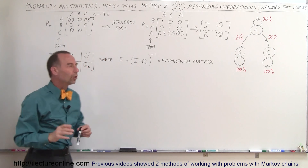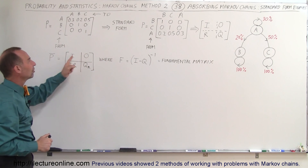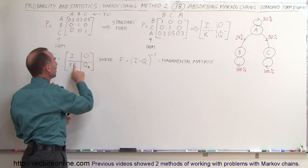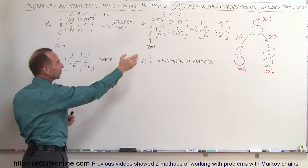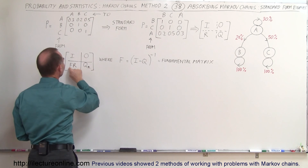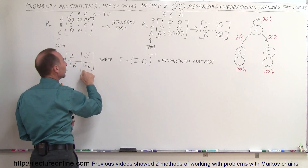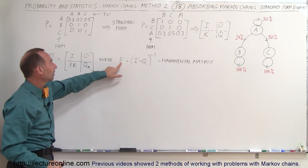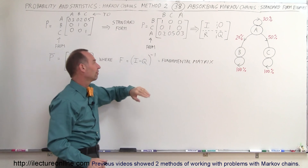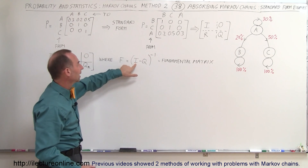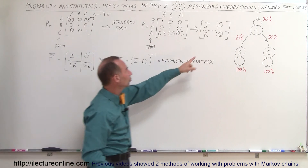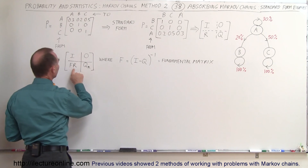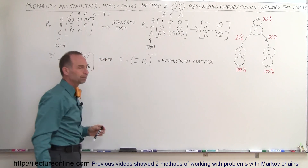To find the stable transition matrix, we convert it so that the I and zero stay the same, but instead of the R matrix we get F times R, and Q sub n which is typically equal to zero. F times R requires us to first find the fundamental matrix F, which is the identity matrix minus Q, and then take the inverse of that. Then we multiply F times the R matrix.